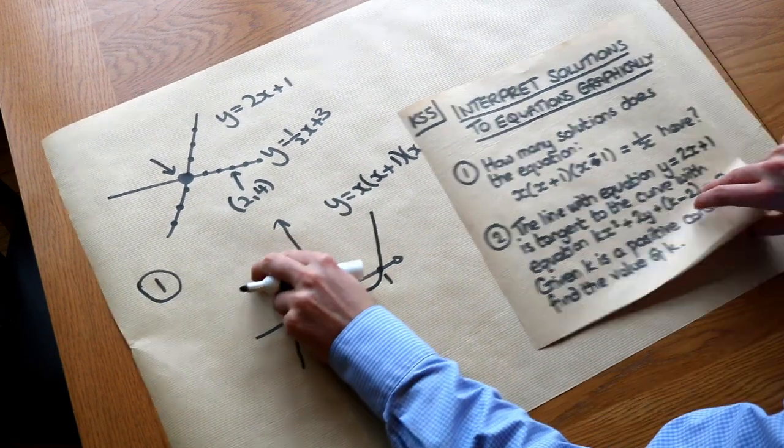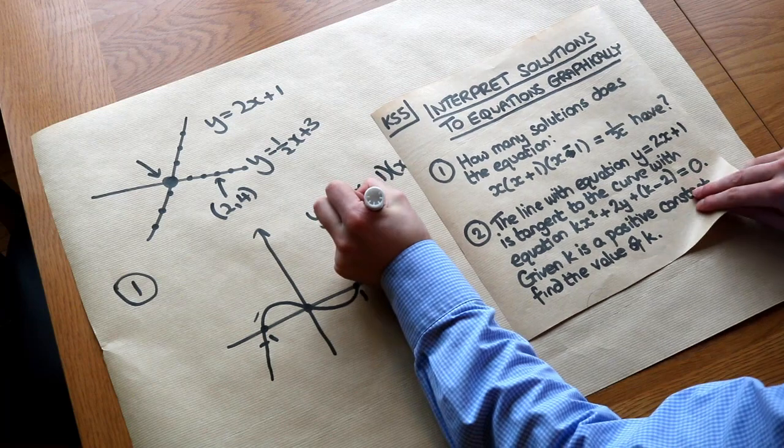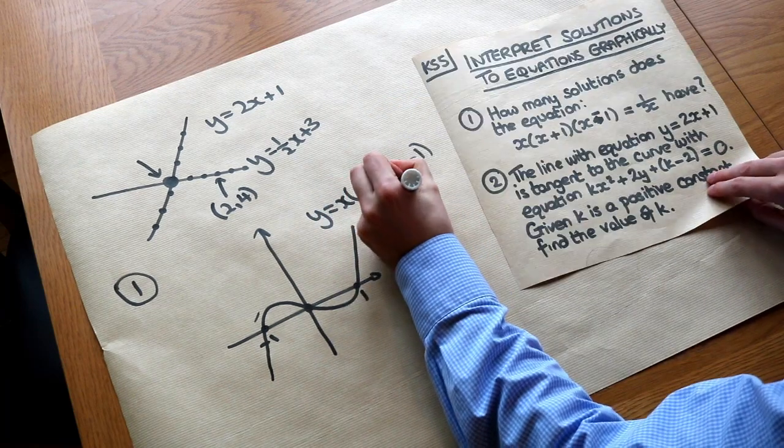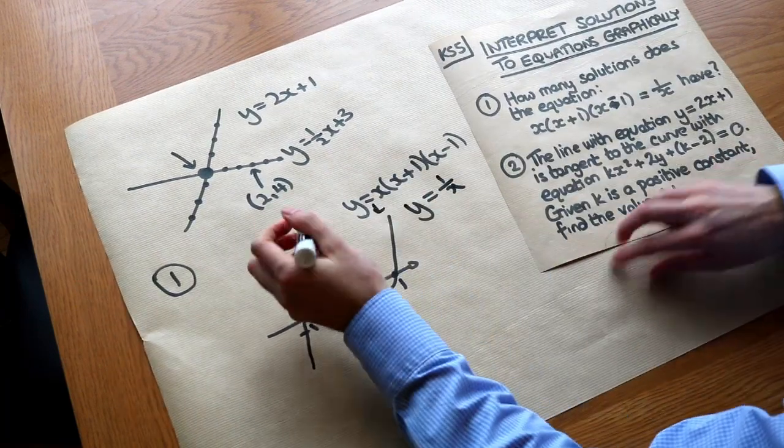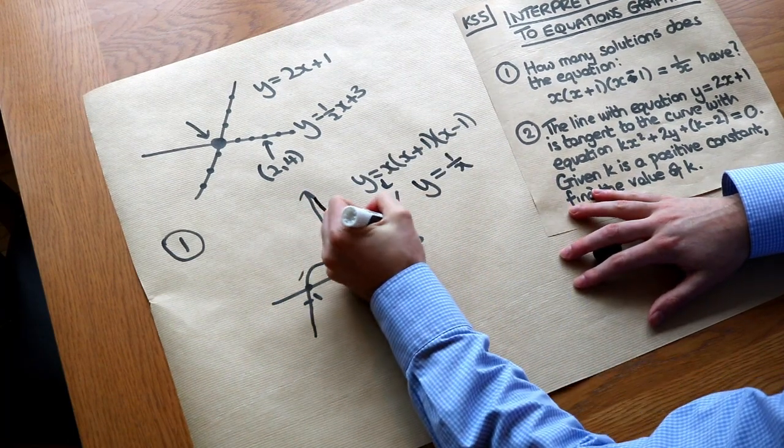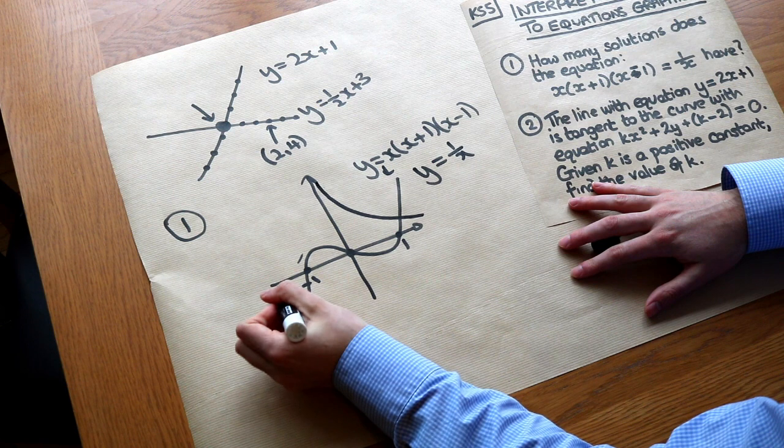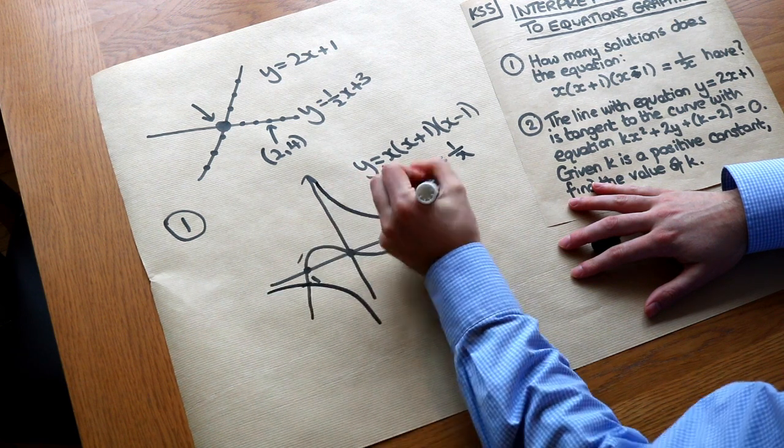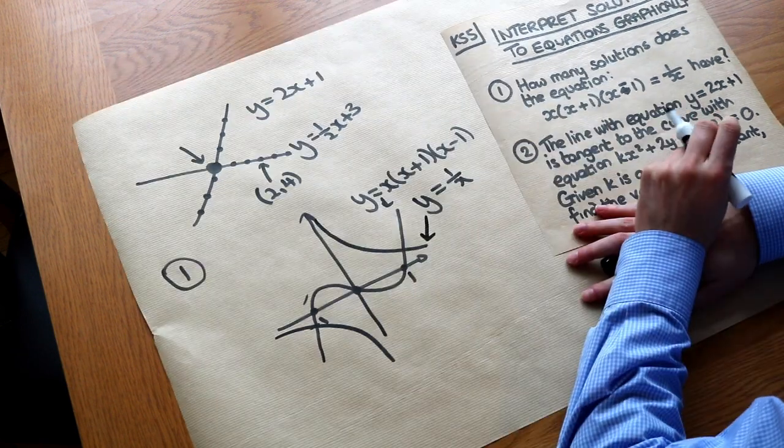And then we could also sketch y is equal to the right-hand side. So if I sketch y is equal to 1 over x, it's a reciprocal graph and positive reciprocal graphs look like this. So you have a curve like this and then a curve like this. So that is the y equals 1 over x graph.